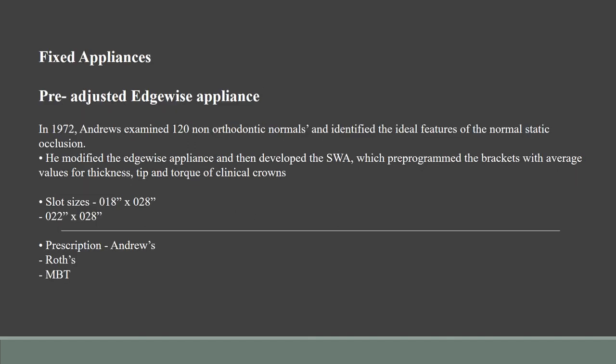It was Lawrence Andrews who devised and added additional features to the edgewise appliance and called it the pre-adjusted edgewise appliance, also known as the straight wire appliance. It was pre-programmed in the sense that the brackets had average values for thickness, tip and torque unique to each clinical crown. The slot sizes were available in two dimensions, and the prescription was later modified by other authors such as Roth and MBT.